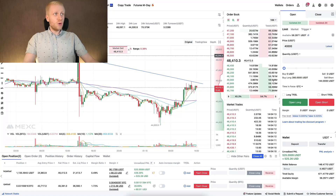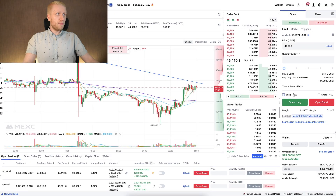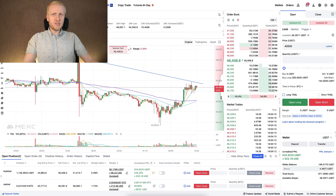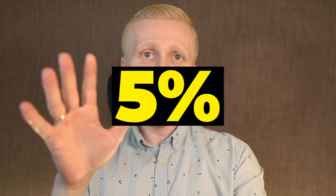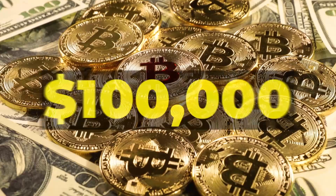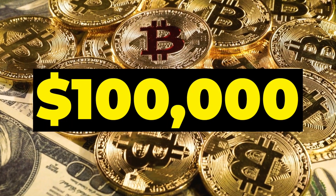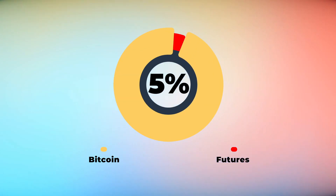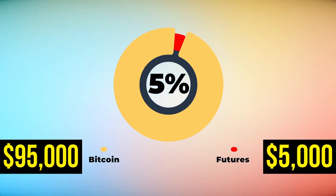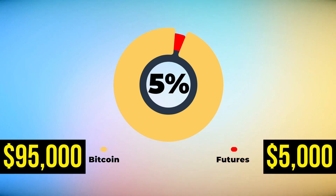Then of course manage your risks. You can use the take profit and stop loss features, but I think the biggest one is using only a small part of your portfolio for futures trading. I recommend a maximum of 5% — so if you have 100,000 dollars in Bitcoin, use a maximum of 5,000 dollars for futures trading. Use indicators, follow a strategy, and don't go just with emotion like most beginners do.